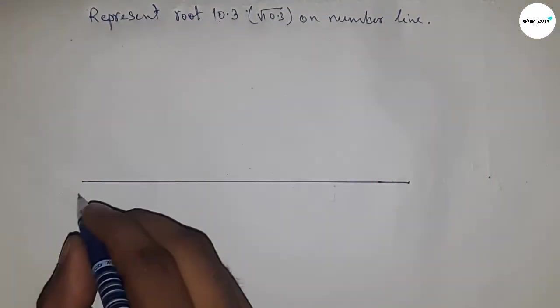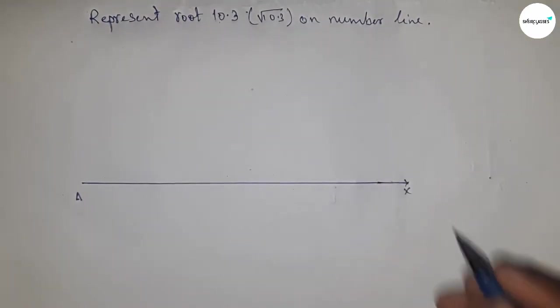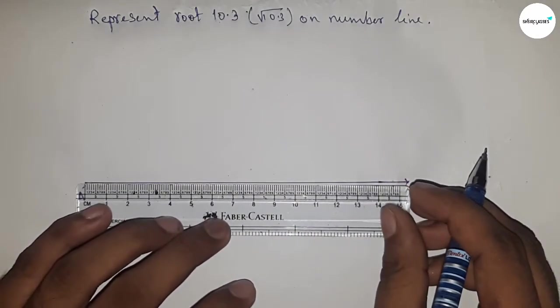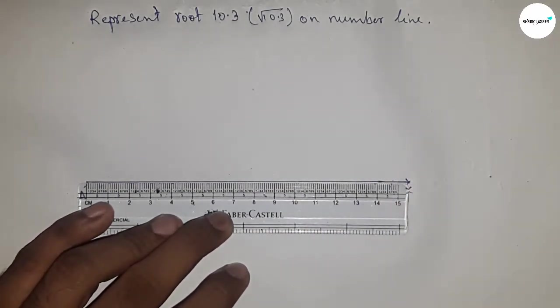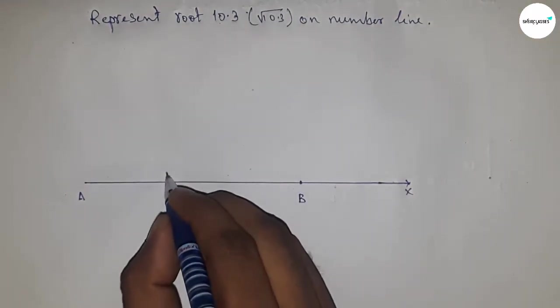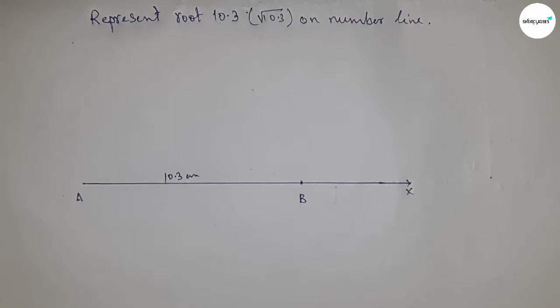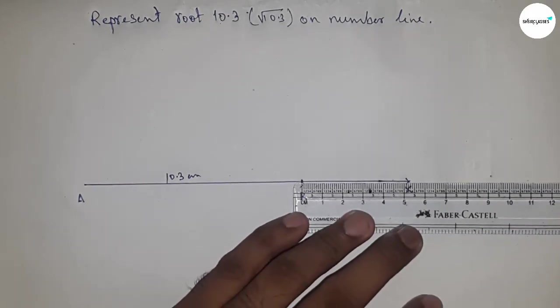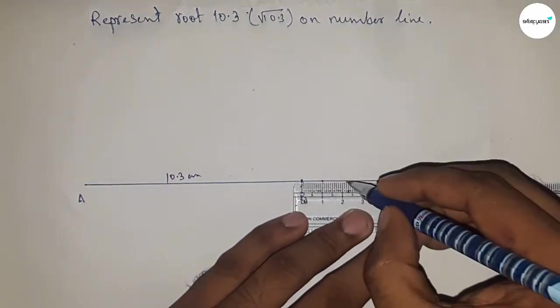This is the AX line. Next, taking 10.3 centimeters by using scale. So this is 10.3 centimeters to point B. Now marking the numbers on the line from B to X by using scale.